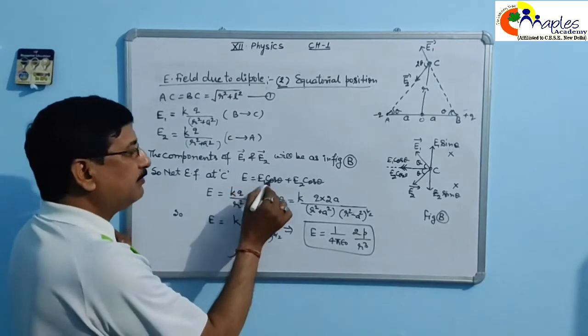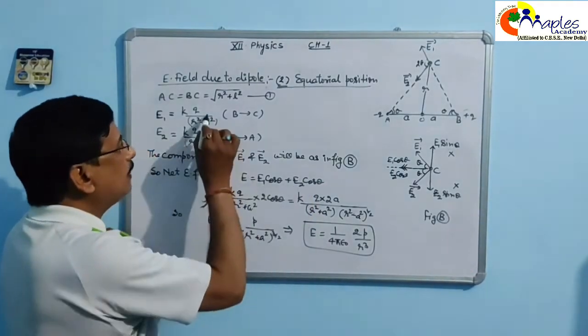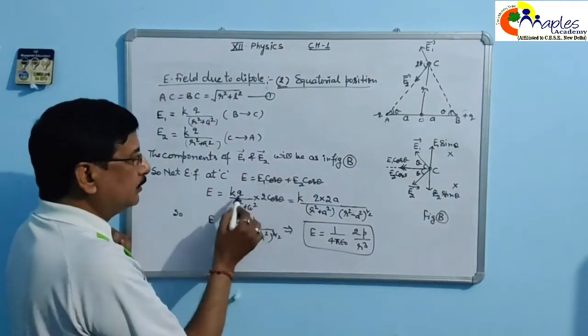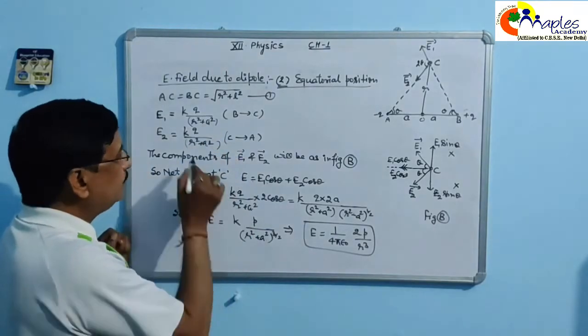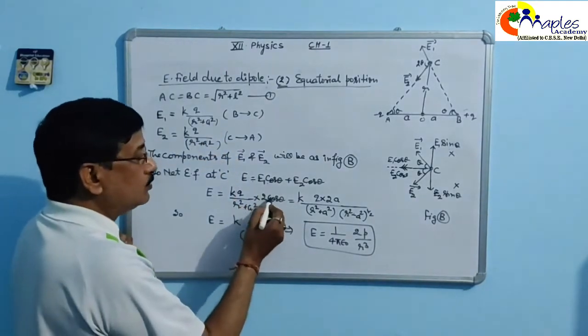So net electric field at C will be equal to E1 cos theta. E1 value put, the same magnitude, and 2 cos theta.